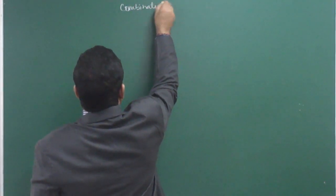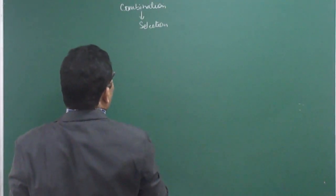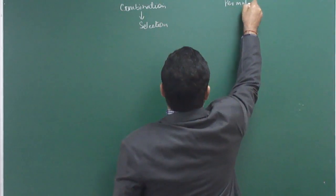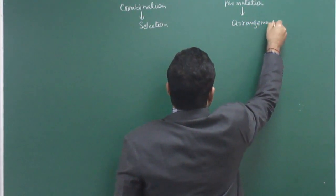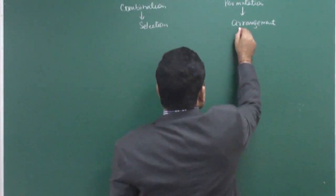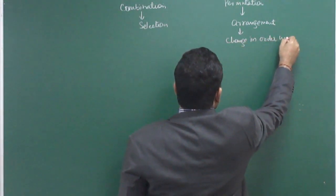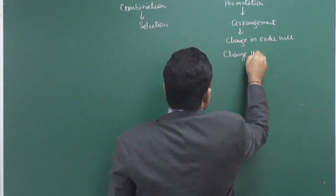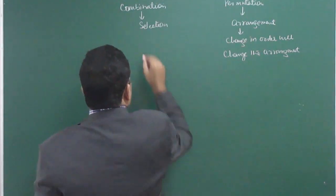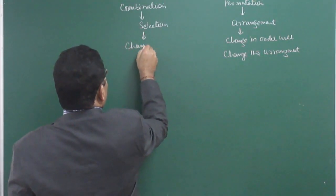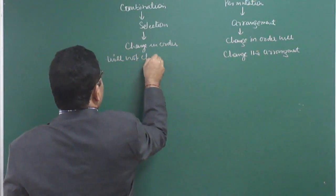Combination means selection. How is it different from permutation? Permutation, which we have learnt earlier, means arrangement. So in arrangement, a change in order will change the arrangement. In combination, change in order will not change the selection.